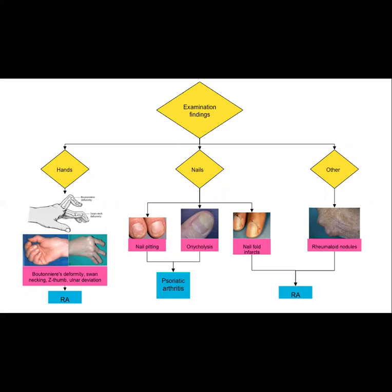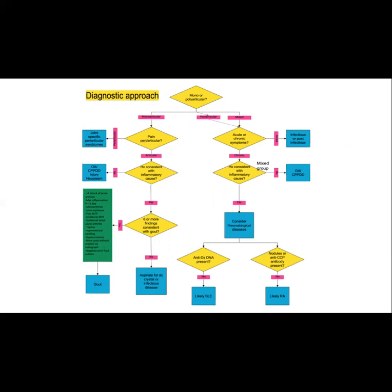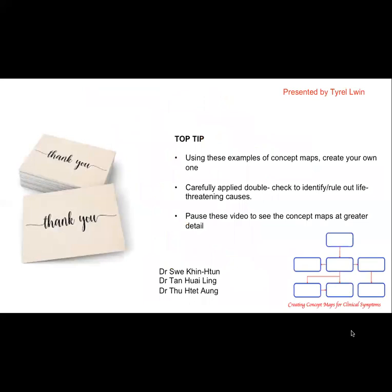A hot joint is easy to recognize but has many causes. Here is a summary slide for our concept map. Remember to use 6S for systematic approach to get your diagnosis. This presentation also provides many facts on top of concept map, hope it is useful for you.